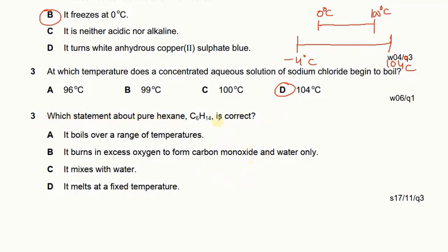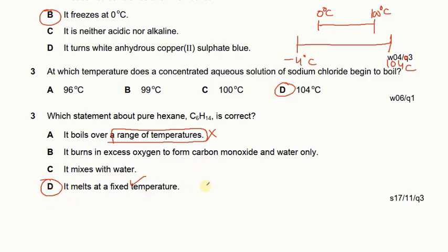Which statement about pure hexane is correct? If something boils over a range of temperatures, that means boiling starts at a lower temperature and ends at a higher temperature — this is only possible when an impurity is present, so that is not correct. Hexane burning in excess oxygen to form carbon dioxide is unrelated to purity. Pure hexane melts at a fixed temperature — melting at a fixed temperature is the test for purity. So that is the correct answer.